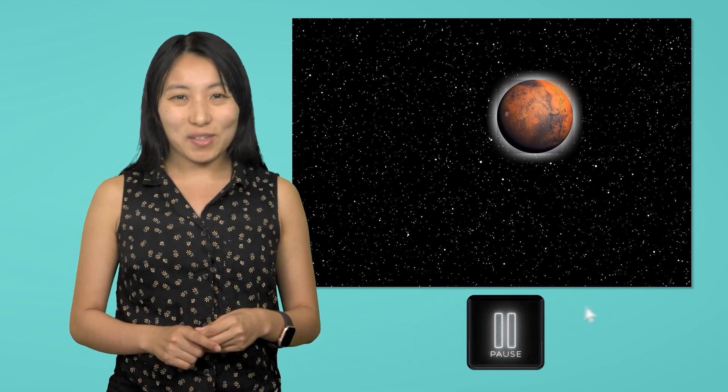How do these observations prove that the geocentric model can't be correct? Pause the video here and record your thinking in your guided notes.